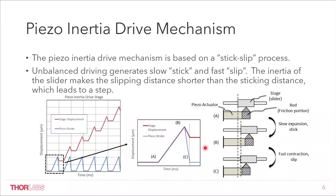Then the rod will slowly push the slider forward. Because the motion is slow, the friction between the rod and slider is static friction, meaning they stick together.